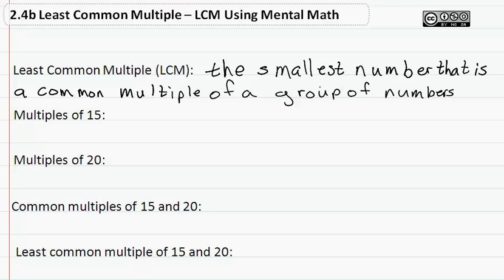That's our definition for a least common multiple. Now multiples of 15, we would be starting at 15, 30, 45, 60, 75, 90, 105, 120, 135 and so on.